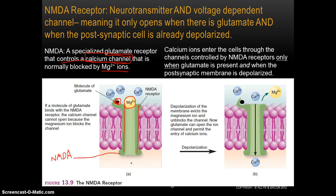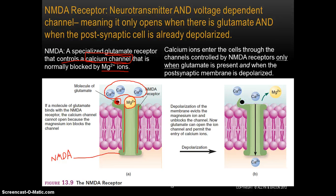So, two things have to happen in order for calcium to flow through. This is a calcium channel — it only allows calcium to flow through, basically like a door that only allows calcium. But the calcium can't get through because this magnesium ion is in the way. Two things actually have to happen for this calcium to come flooding inside the cell. Calcium influx is an important step — it's going to be an important part for learning and memory to happen.